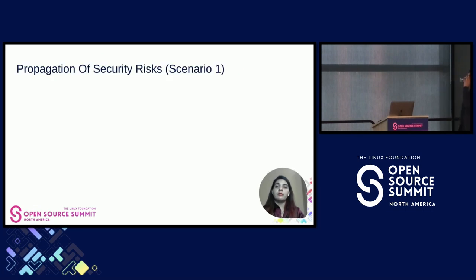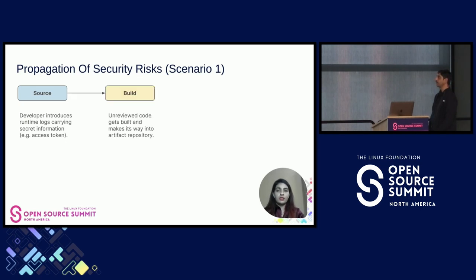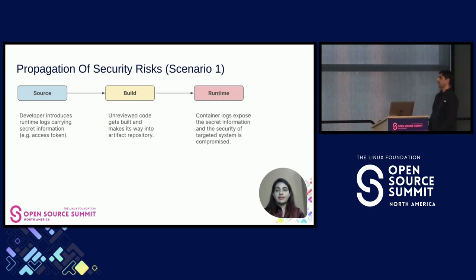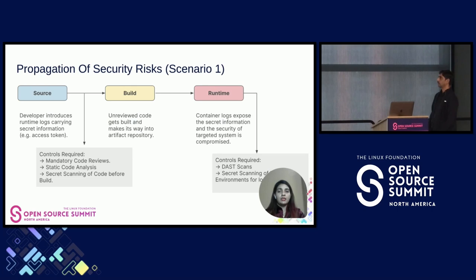Now let's see how some common security breaches propagate through the pipeline and how they could be mitigated with CD events. In this scenario, the developer introduced logs exposing sensitive information, and the repository lacks branch protection policies to prevent unreviewed code merges. The code is built, the artifact pushed to the repository, and once deployed, container runtime logs are problematic and may fail security assessment and compromise the system. Controls could be implemented between source and build stages: checking if code is reviewed, running static code analysis, running secret scanning before the build, and applying runtime analysis like DAST scans and secret scans of runtime environments for log analysis.